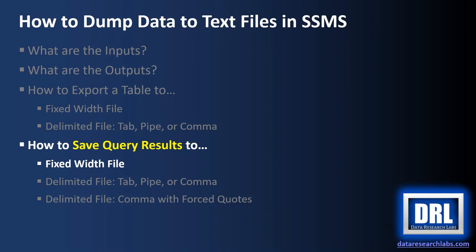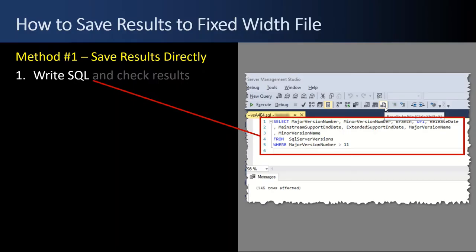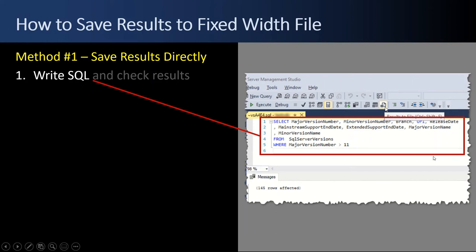Next up, how to save query results to a fixed width file. Now we're switching to saving results from a query rather than exporting from a table. The prior steps exported from a table and generated an SSIS package. Here we're doing something simpler — running a query and then right-clicking the results to save them out as various text format flavors, or using a button. This is simpler because you're in the query window writing SQL and saving results directly.